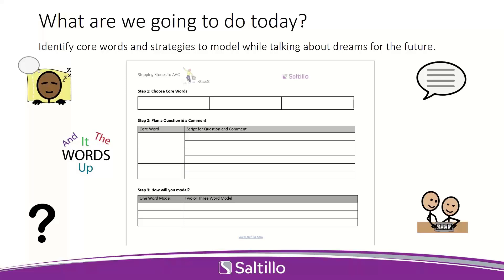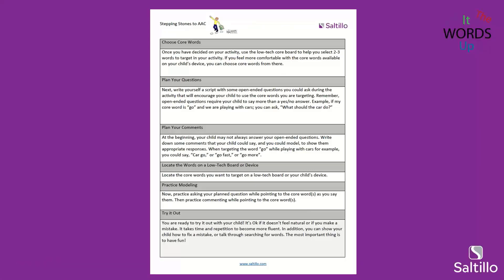Today we are going to be talking about identifying core words and strategies that we can model while talking about dreams for the future. This handout in your materials tab is our planning form - our Stepping Stones to AAC planning guide. This helps us think about what core words to choose, questions and comments we can use with those core words, and how to model those words on a device or low-tech board for our AAC user. Be sure to download that - you can fill it out with us as we go along or save a blank one for later.